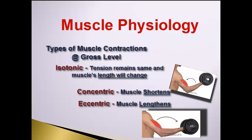For example, during a squat with weights on your shoulders, as you go down some muscles will shorten while others will lengthen. Those that shorten are undergoing concentric contractions, and those that lengthen are undergoing eccentric contractions.